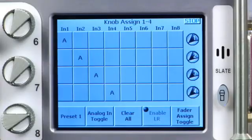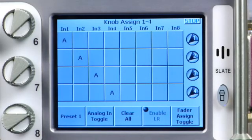Press Fader Assign to bring up the fader routing matrix. This menu routes inputs to faders. By default, input 1 is routed to fader 1, 2 to 2, 3 to 3, and 4 to 4. This is good for our 4-track over-the-shoulder setup.